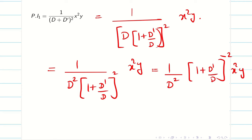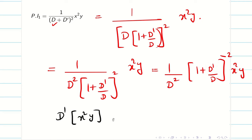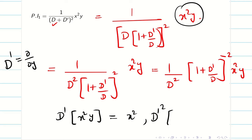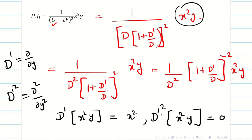Before solving the problem, we have to know the strength and weakness of our opponent. The strength here is x power 2 into y, so we take d outside. Now the weakness: d dash is in the numerator. d dash of x square y means derivative with respect to y partially, which gives x square. d dash square means differentiating twice partially with respect to y, and the answer is 0. So only the first derivative exists; second derivative and higher are all going to be 0.